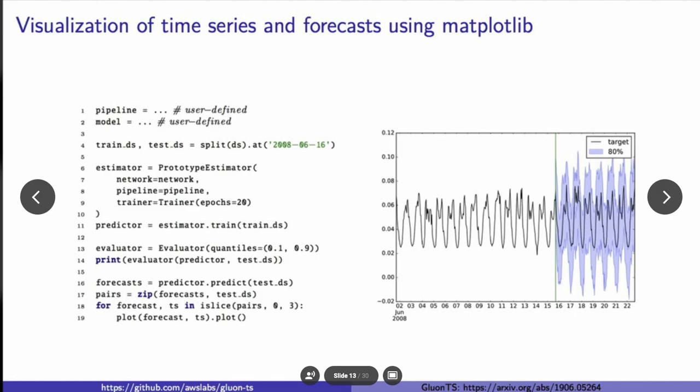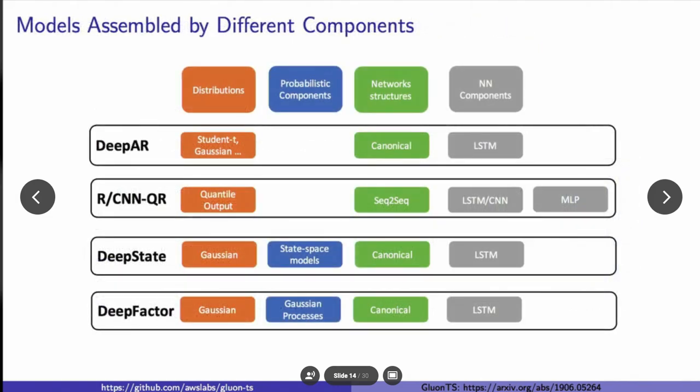In this other example here, you'll see another excerpt of code. We're defining the train and test split at a particular time point. But what I wanted to highlight is you can also plot your forecast using matplotlib, which you'll see with the last line of code here. You can just call .plot. And on the right, you'll see the probabilistic forecast, as indicated by the light blue region there.